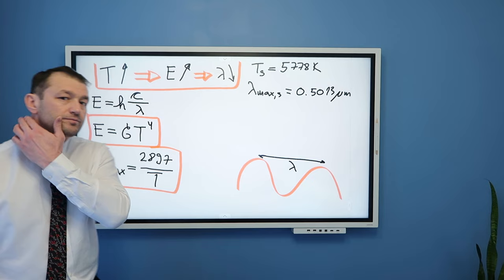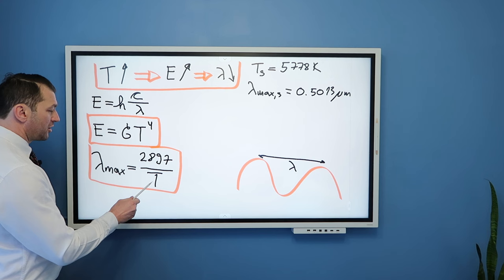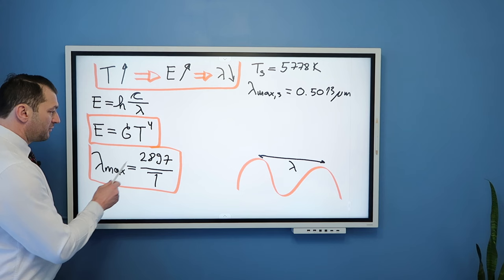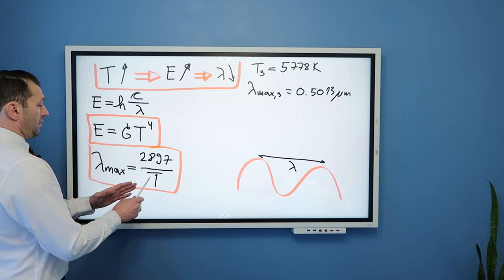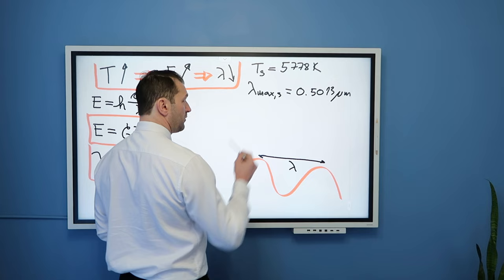Now, by the way, yes, I should say if you want to use this equation, then temperature should be in kelvins and the result you will get is in micrometers. Which means this constant has actual units micrometers times kelvin. If you want to use Celsius, then this constant has different value. At any rate, this is for the Sun. Sun is much hotter than the Earth.